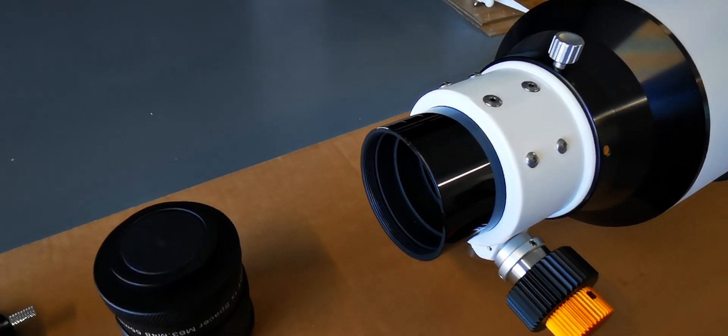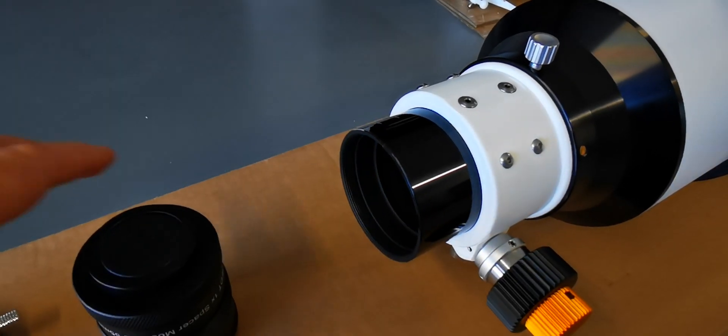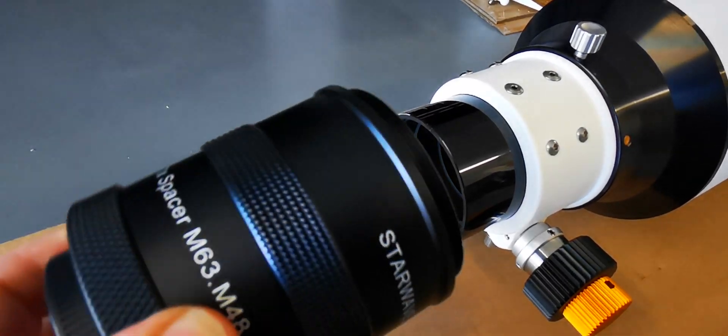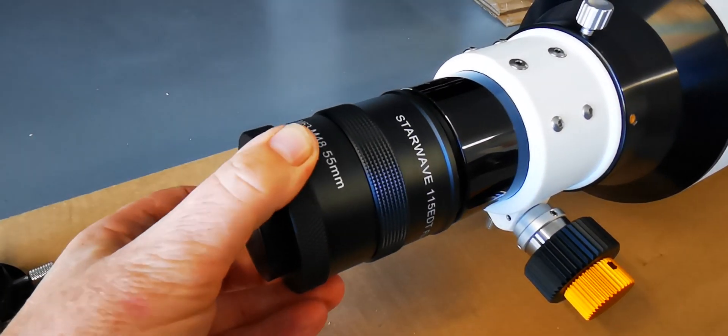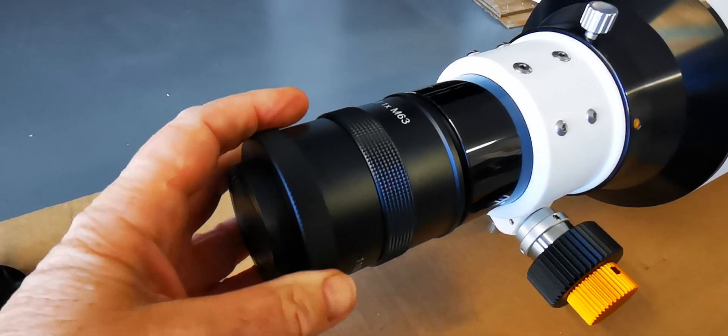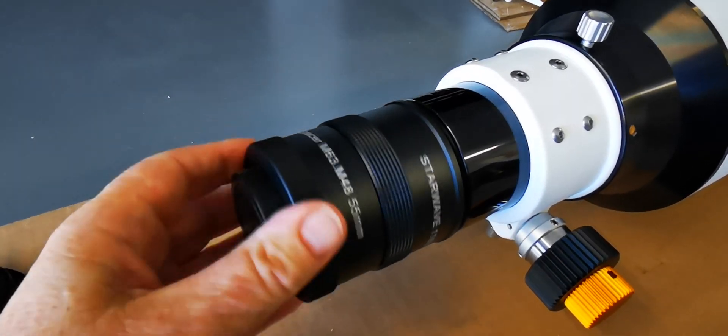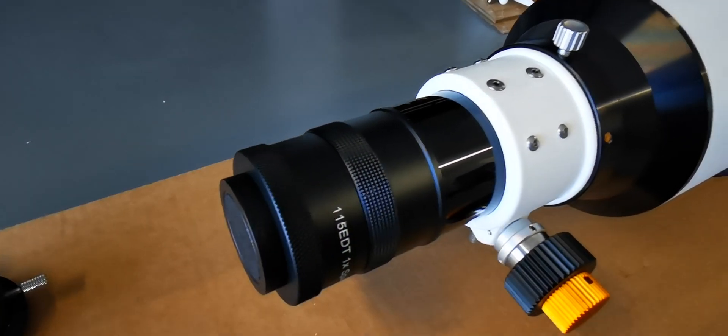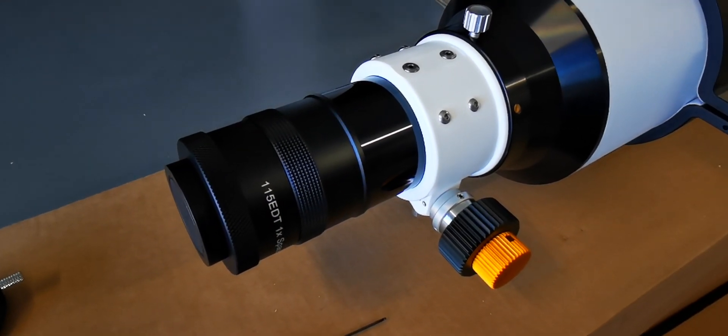So that comes off and we're now left with the focuser. Take the M63 end of the flattener or reducer and simply screw it onto the end. That's it.